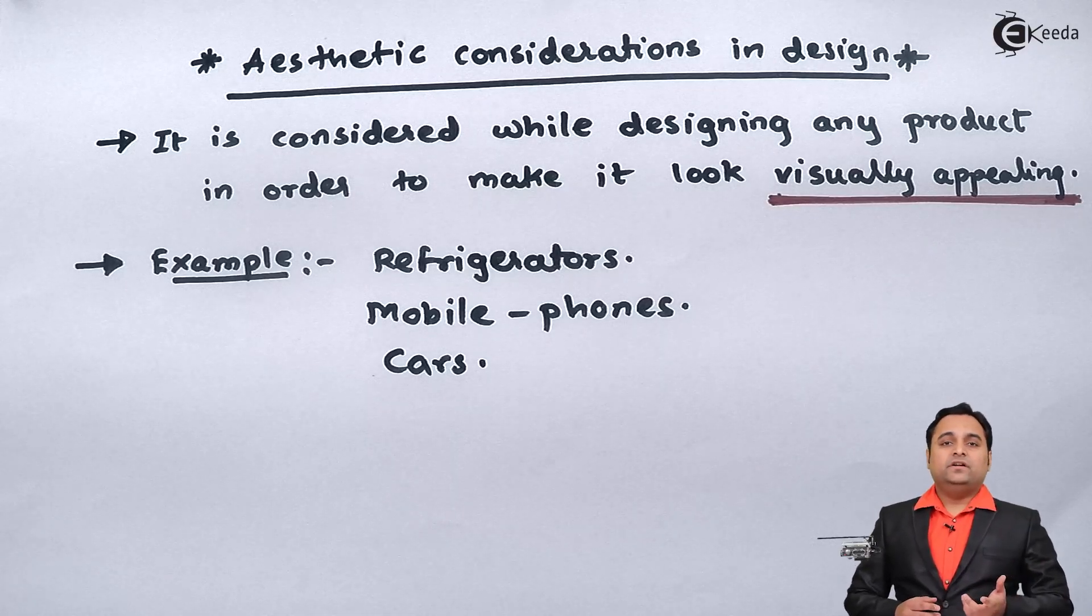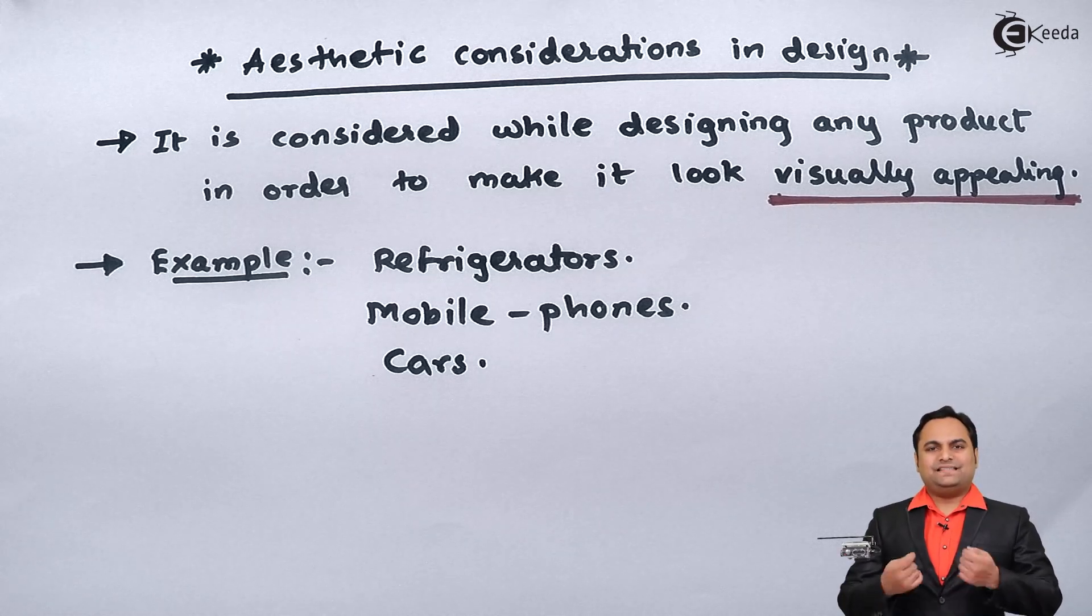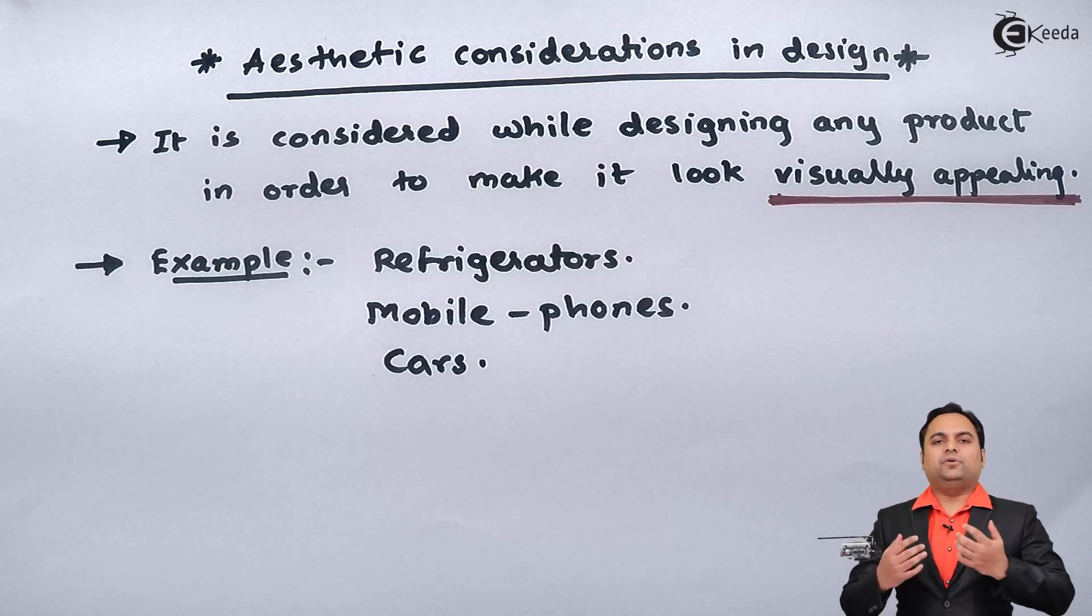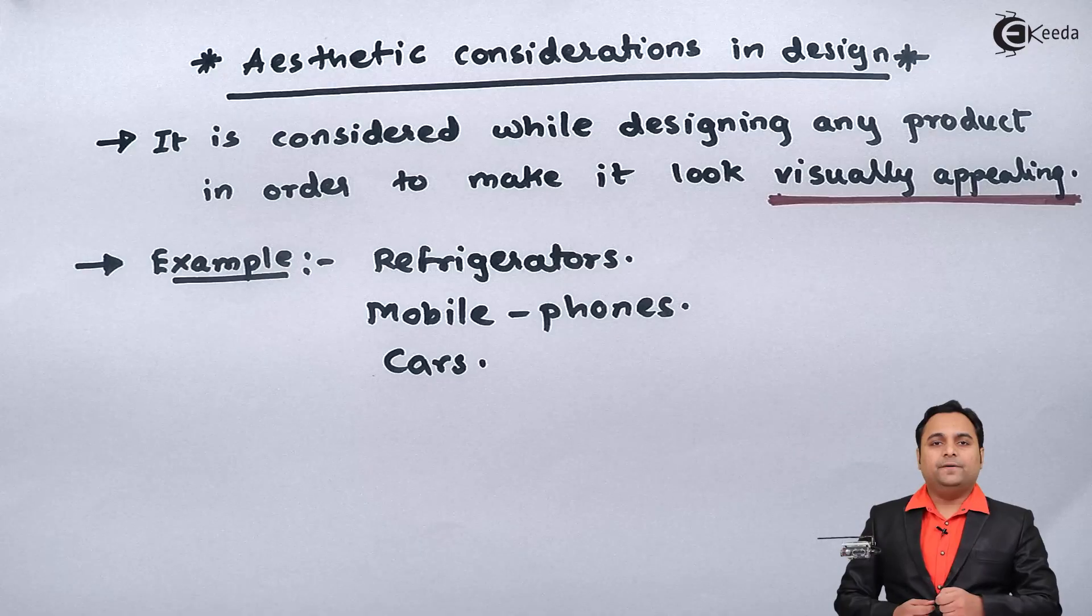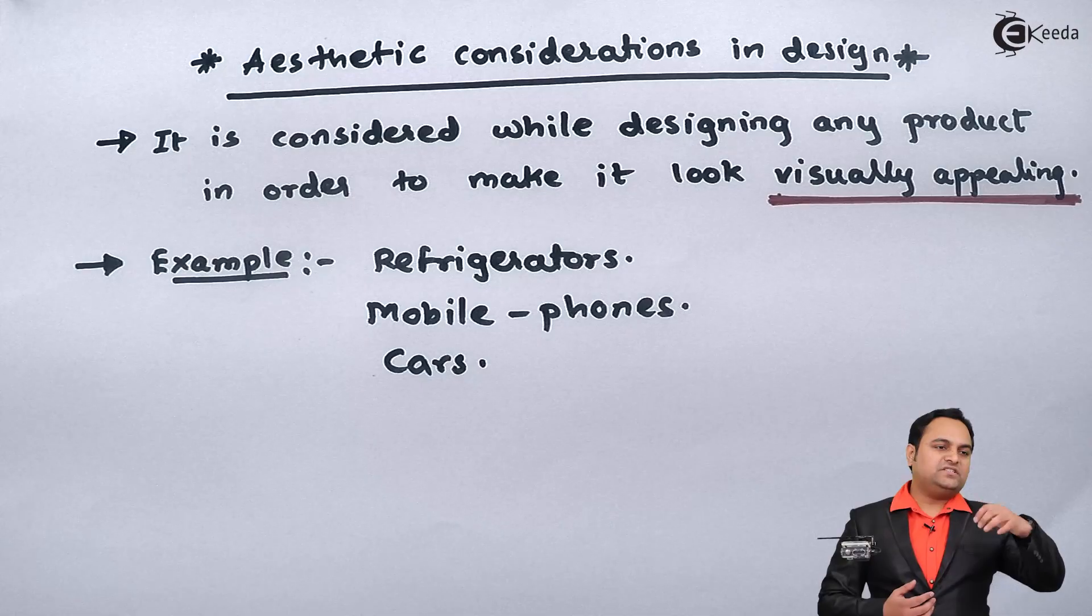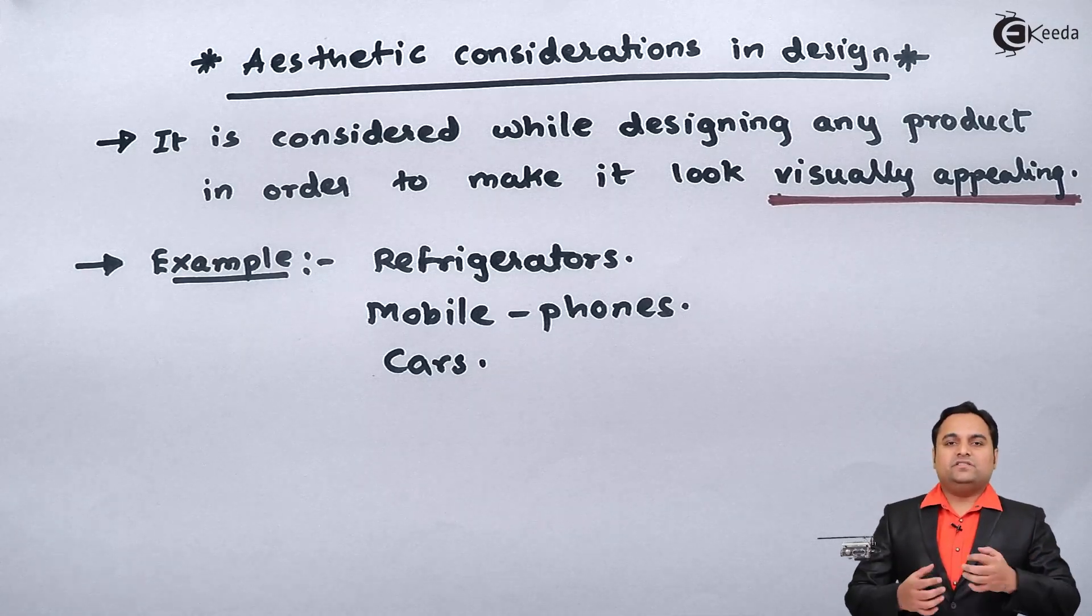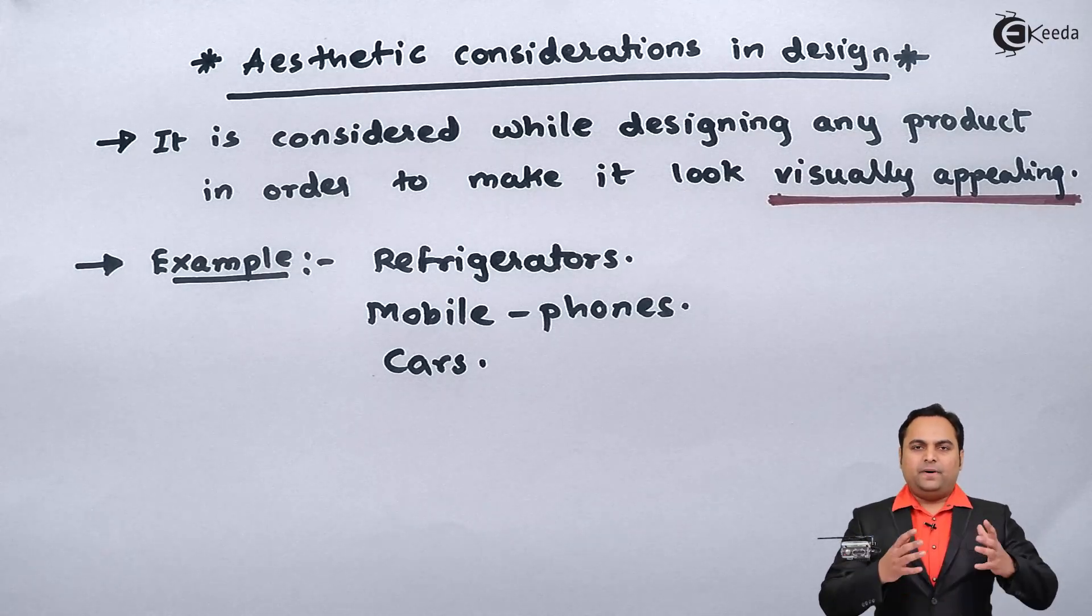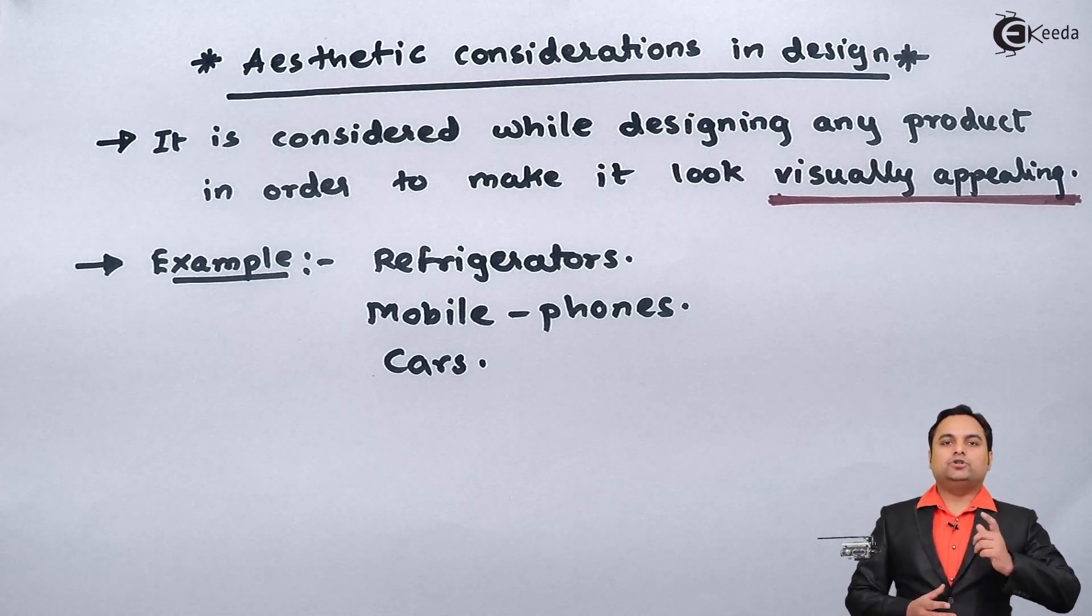different shapes, and even different materials. So that is nothing but aesthetic consideration. A car, apart from running and carrying people from one place to another, should also look appealing. The color and texture of the car should be such that just by looking at it we must feel like buying it. So this is another consideration in design - that apart from its requirement and working, we must also see how it looks.